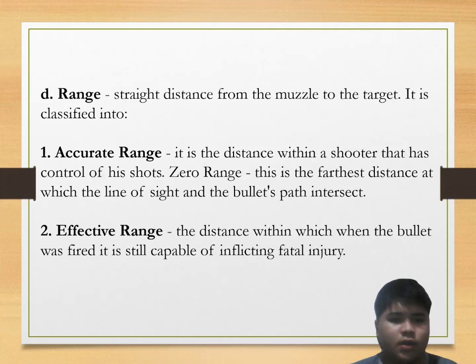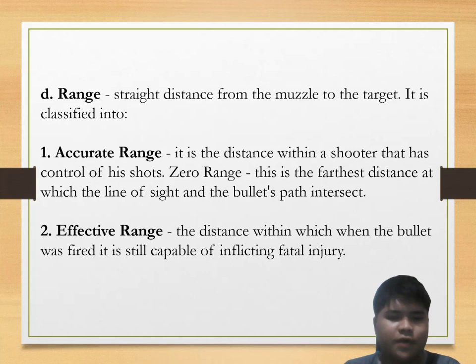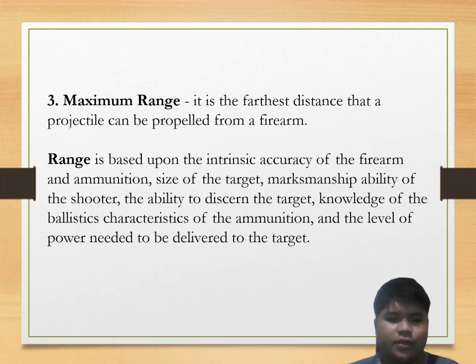Range is the straight distance from the muzzle to the target, classified into accurate range, effective range, and maximum range. Accurate range is the distance within which the shooter has control of the shot. Zero range is the farthest distance at which the line of sight and the bullet's path intersect. Effective range is the distance within which the fired bullet is still capable of inflicting fatal injury. Maximum range is the farthest distance the projectile can be propelled from a firearm. Range is based on the intrinsic accuracy of the firearm, ammunition, size of the target, marksmanship ability, ability to discern the target, knowledge of ballistic characteristics, and the level of power needed to be delivered.